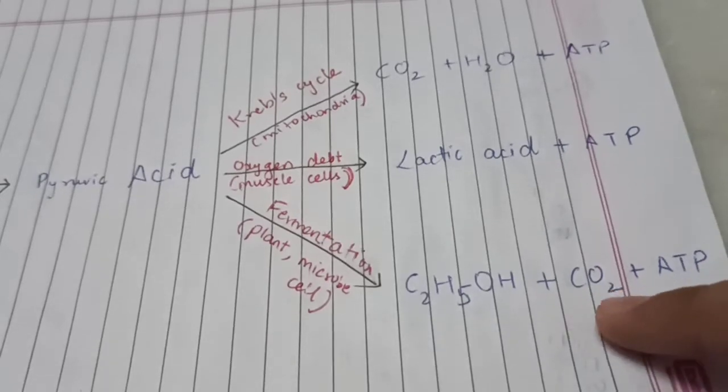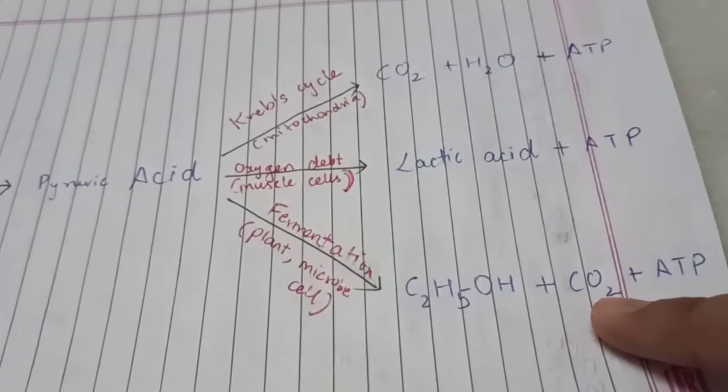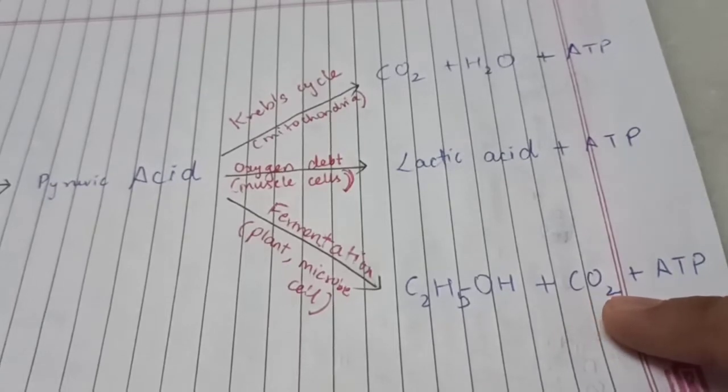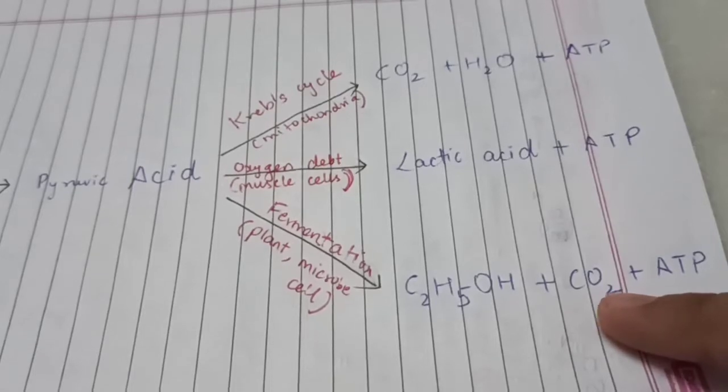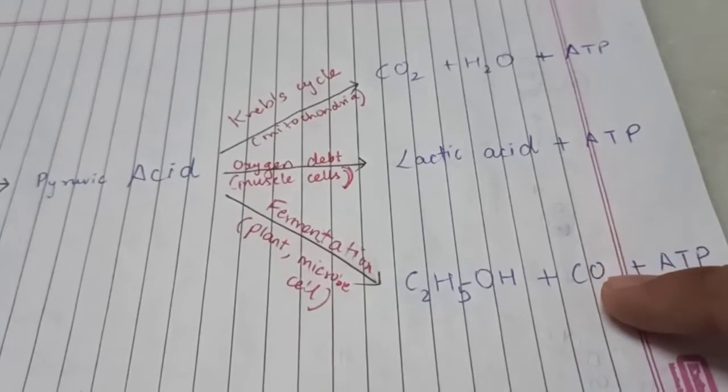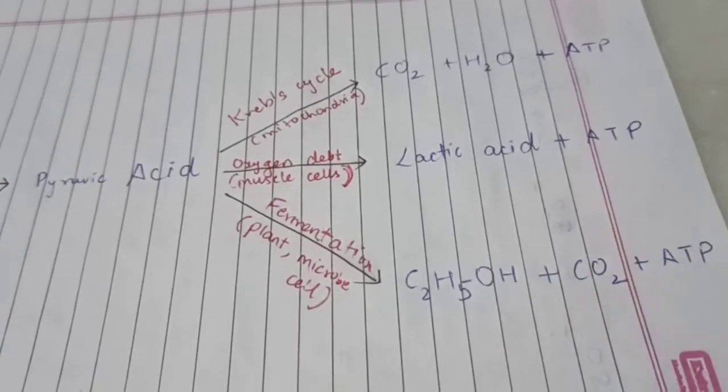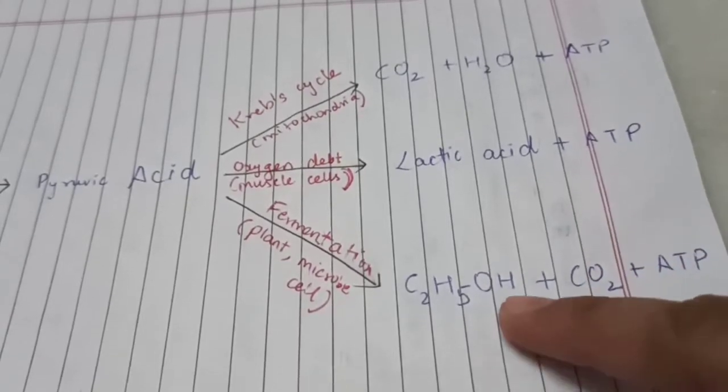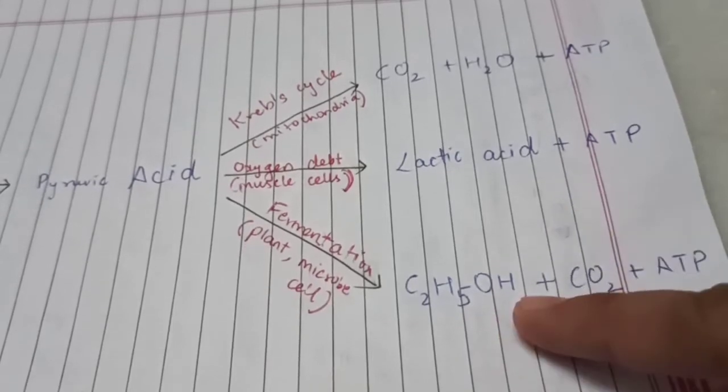Notice that the CO2 produced here is the cause for the bubbles you see in the idli batter or in the bread dough. And when you heat it or cook it, the CO2 releases, leaving behind pores, which makes the bread or the cake very soft. And, unfortunately, some alcohol produced is also evaporated. So, there is no alcohol left in the bread or the cake.